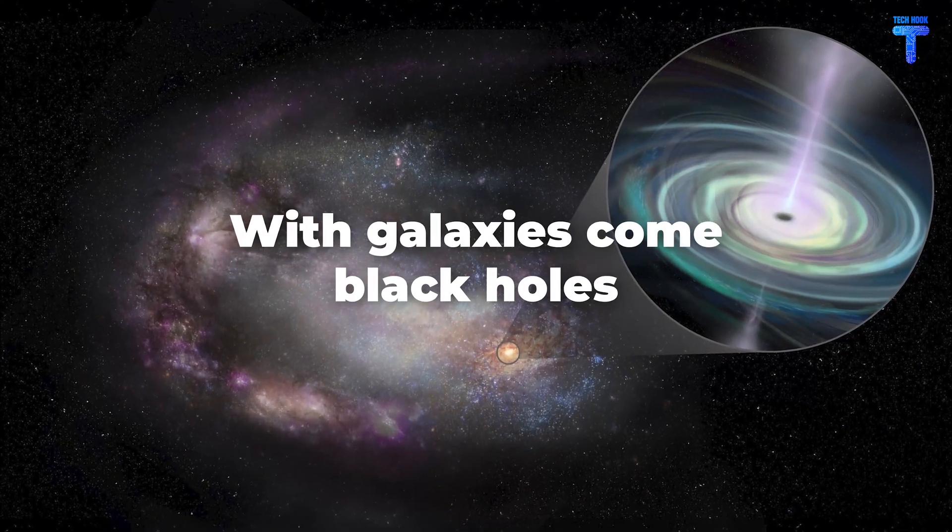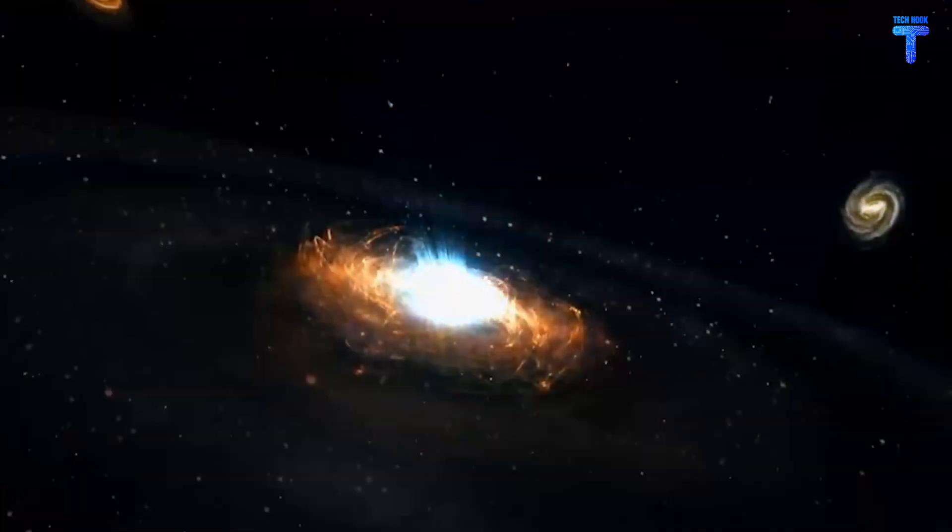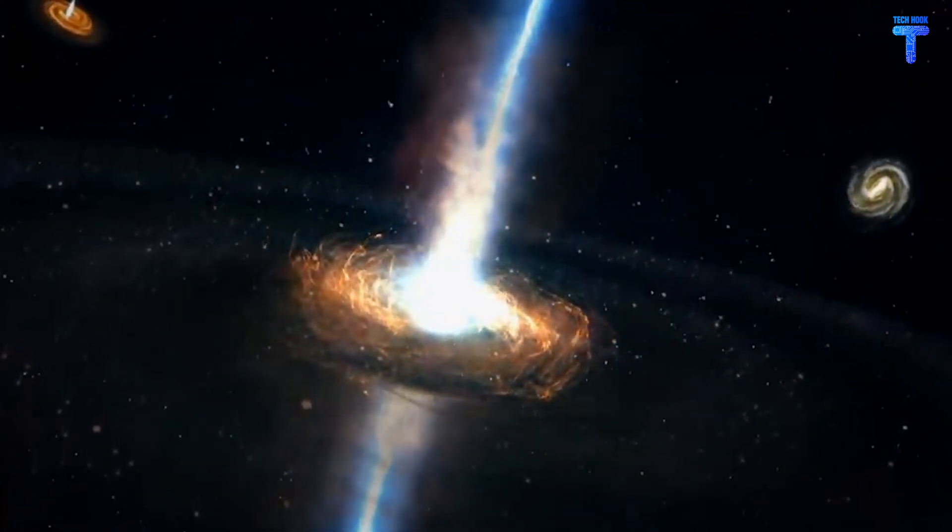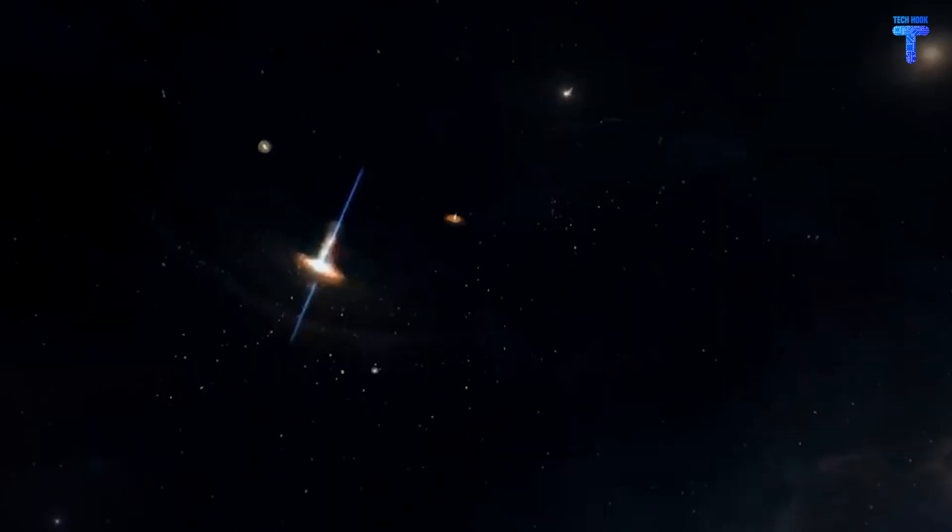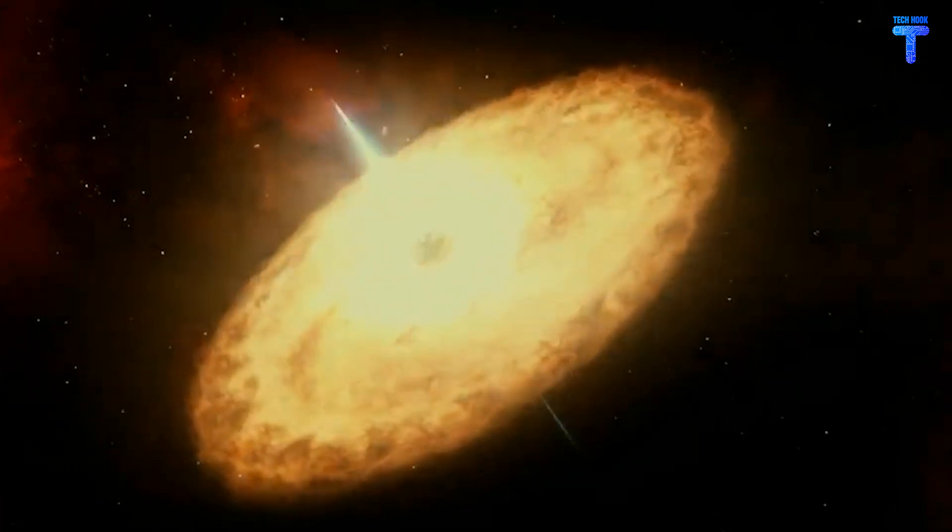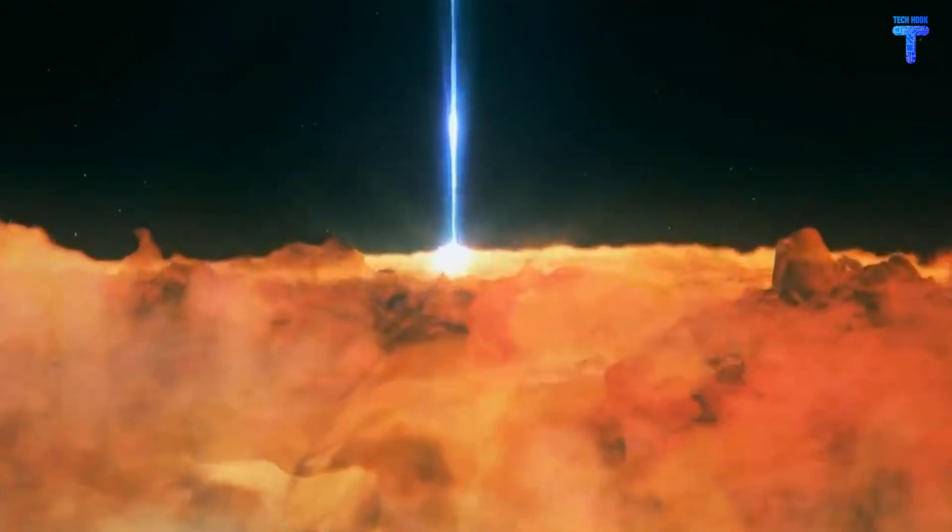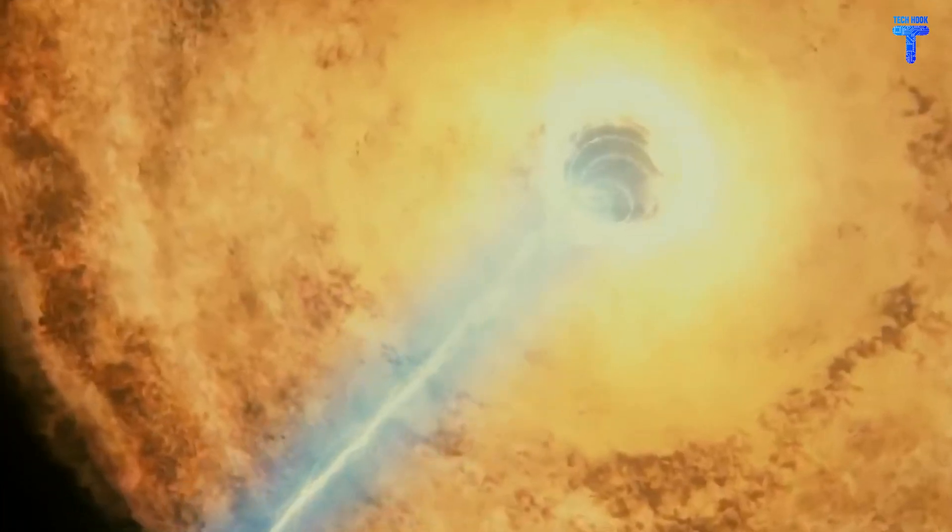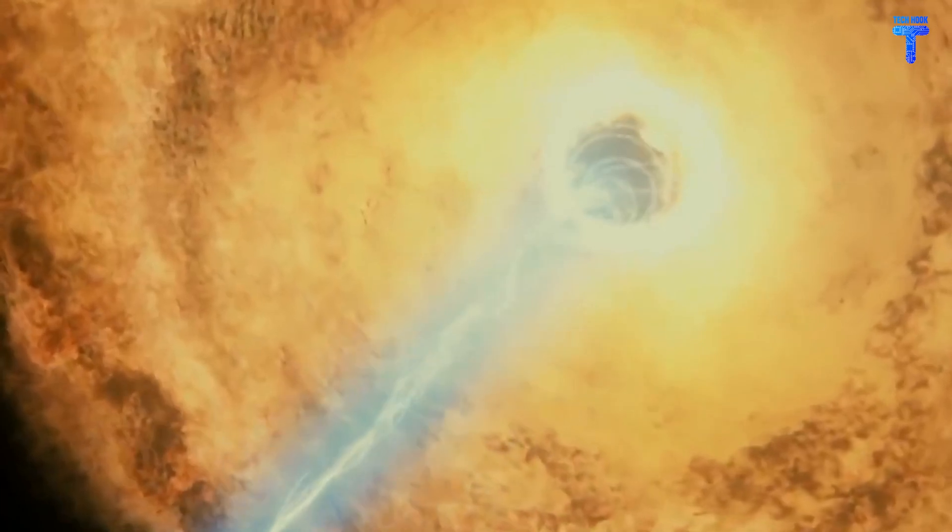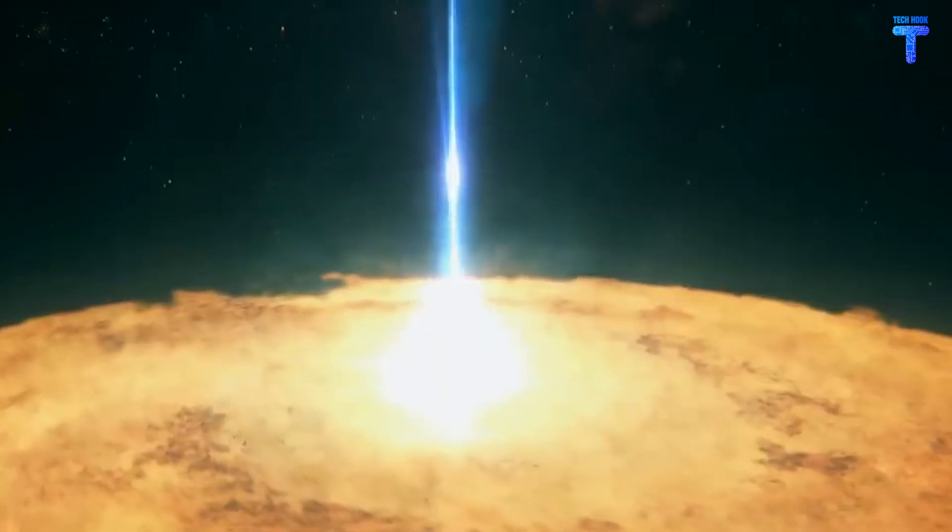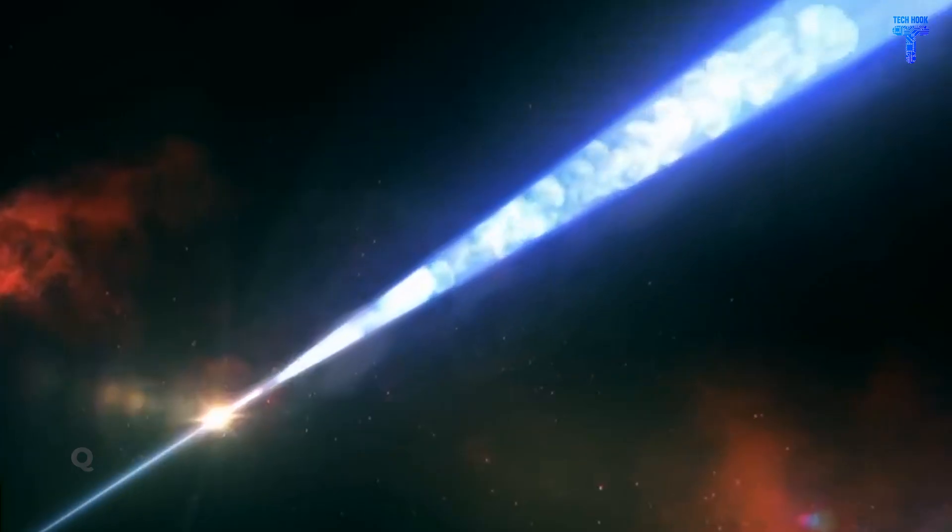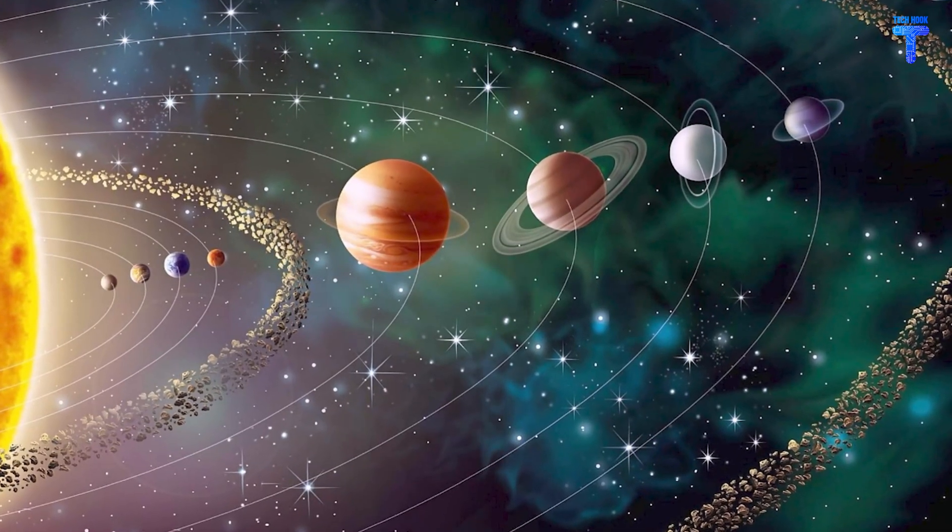With galaxies comes black holes. Black holes which are located in the cores of most galaxies have the capacity to generate enormous amounts of energy, which astronomers can detect even from very long distances. Even in relatively tiny galaxies, a galaxy's core black hole can occasionally be exceptionally big or active. The black hole's jets have the ability to propel matter that is orbiting it outward. The most energetic objects in the universe, also known as quasars, may be found near the centers of other galaxies.